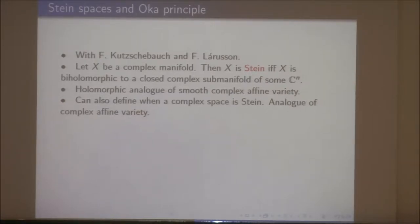It's not necessarily embeddable in C^n because it might have too many singularities — it's locally embeddable into C^n, but then you need some global conditions. Just think of a Stein space as a complex affine variety.